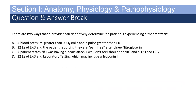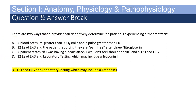There are two ways a provider can definitively determine if a patient is experiencing a heart attack. A — blood pressure greater than 90 systolic and pulse greater than 60. B — 12-lead EKG and patient reporting pain-free after 3 nitroglycerin. C — patient states they wouldn't feel shoulder pain if having a heart attack, and a 12-lead EKG. Or D — 12-lead EKG and laboratory testing, which may include a troponin I. If you selected D, 12-lead EKG and laboratory testing including troponin I, you are correct.